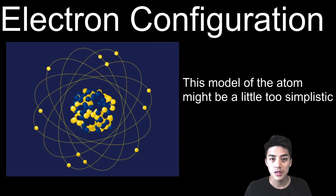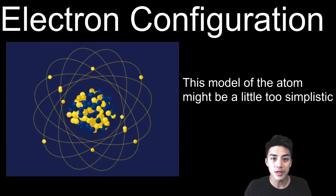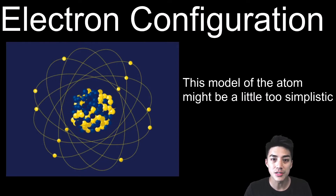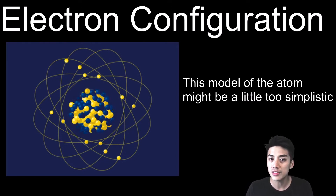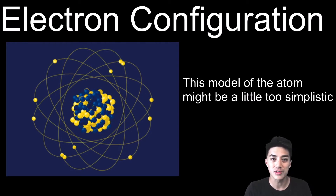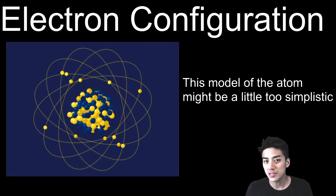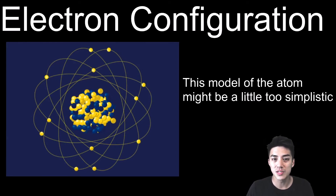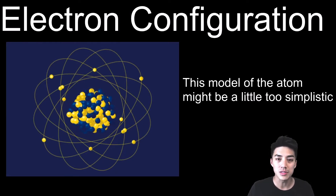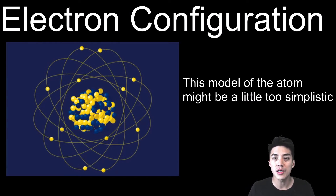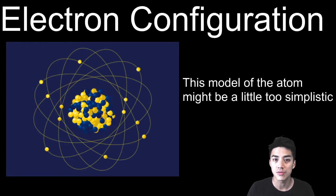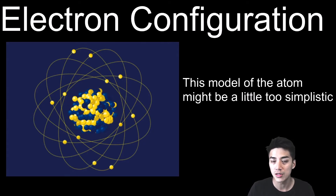Throughout all of your science classes, you've been shown a model of the atom that looks like the one on the screen. You have protons and neutrons which make up the nucleus in the center, and they're orbited by electrons that go around in perfect rings. But unfortunately, even though this model helps explain a lot of things in science and chemistry, it might be a little too simplistic. So today we're going to learn about electron configurations and how we think electrons are arranged around the nucleus and how they actually orbit the nucleus.